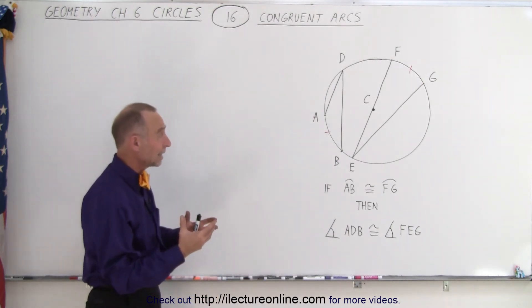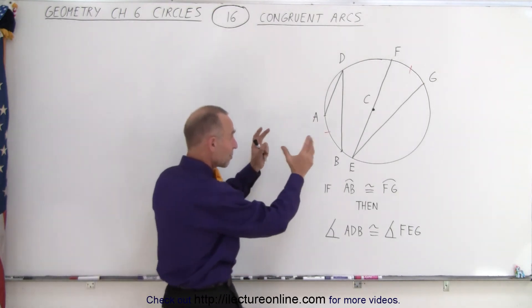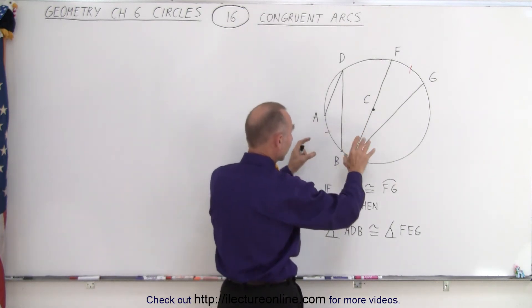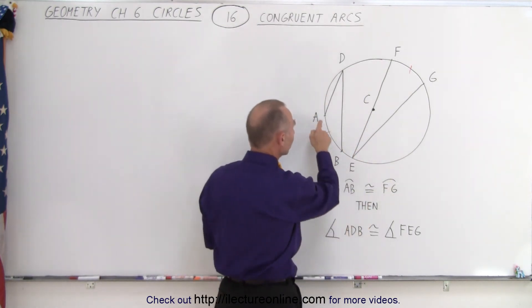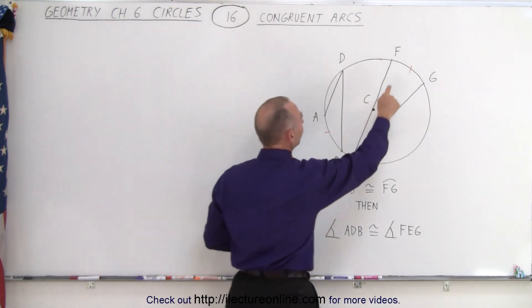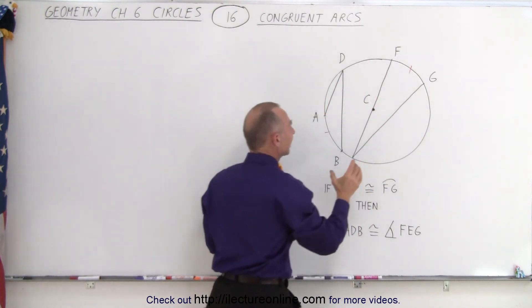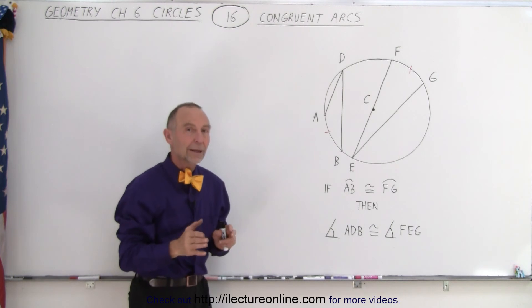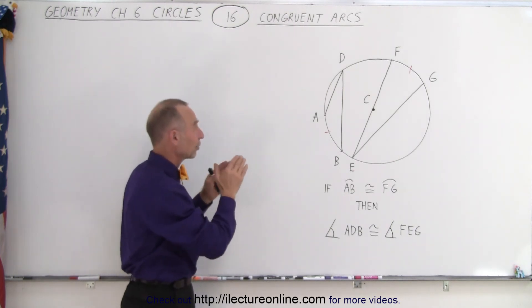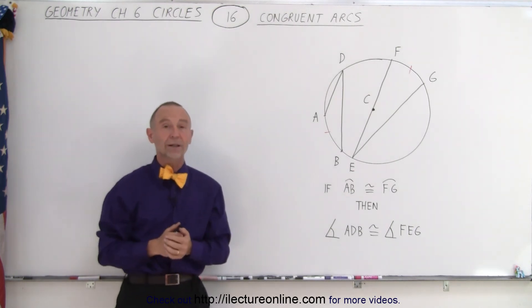And that comes in really handy, especially when you don't have a very symmetric relationship between the two angles, when they're drawn in very different ways. As long as the measure of the intercepted arc is equal, then we know that the measure of the two angles must be equal as well.